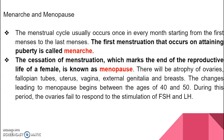During menopause, there is atrophy of the ovaries — the ovary gradually atrophies. There is also degeneration of the fallopian tube, uterus, vagina, external genitalia, and the breast. The changes leading to menopause begin between the ages of 40 to 50, during which the ovary fails to respond to hormones like FSH and LH from the hypothalamus.